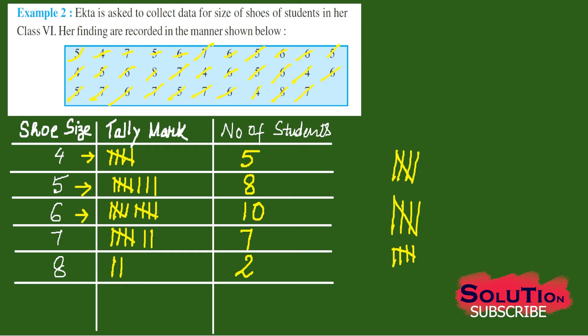So this is how I have arranged the data according to the shoe size. So I can clearly see that maximum students have shoe size 6, and the very least students have shoe size 8. That is 2 students only. This is what we do once we get data in tabular form like this. Or we can collect data and then we can arrange it in tabular form with the help of tally mark. And then we will find number of students like this. So this is a very small example how to do this.